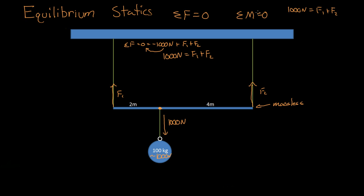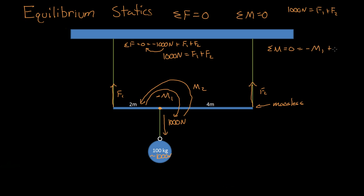To find the actual forces, we need to find the moments they generate around this point. The summation of the moments must equal zero. Force one has its own moment — it's causing rotation one way — and force two also has its own moment rotating the other way. Since the thousand newtons is pulling straight down at this point, it has no moment. So: moment one plus moment two equals zero, meaning moment one must equal moment two.